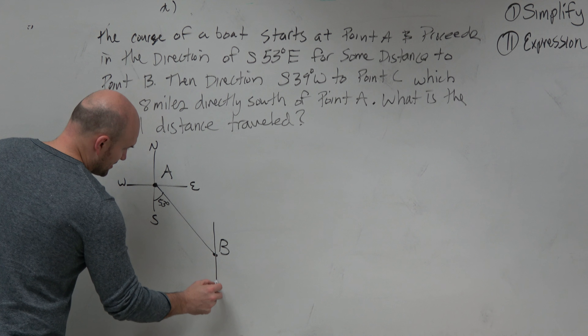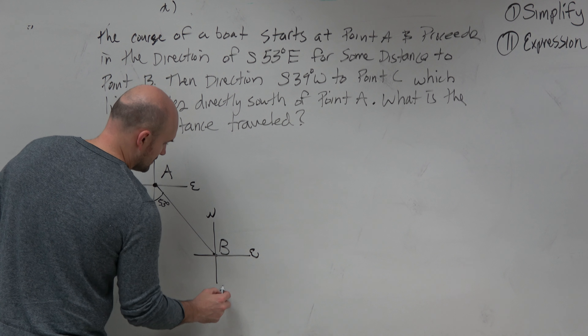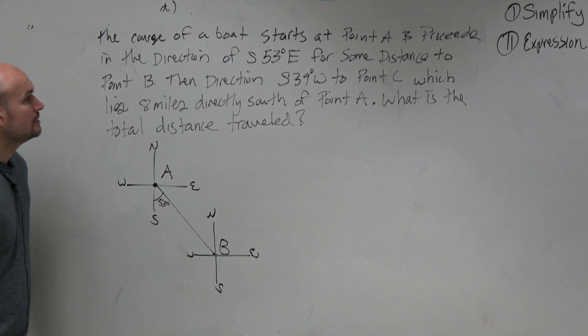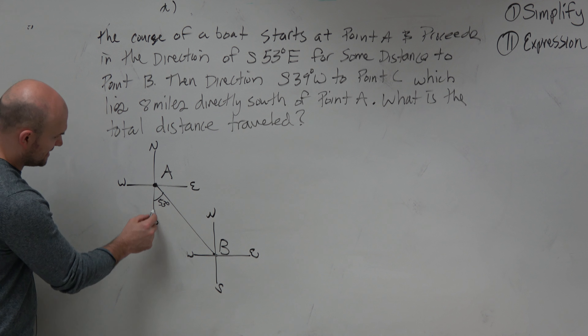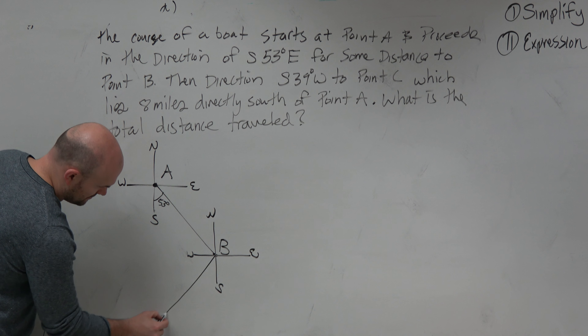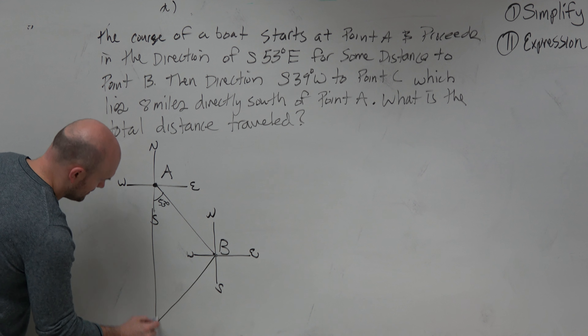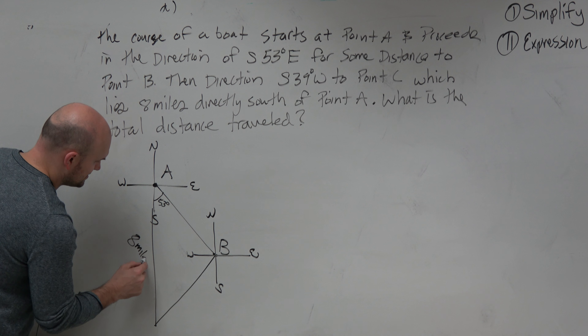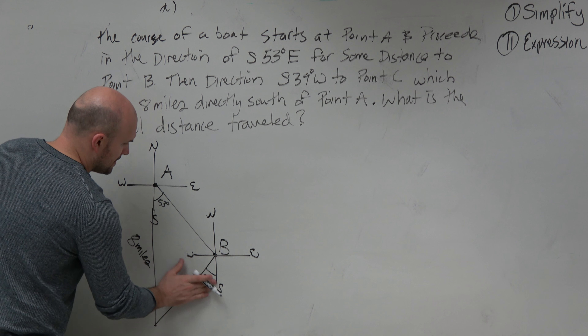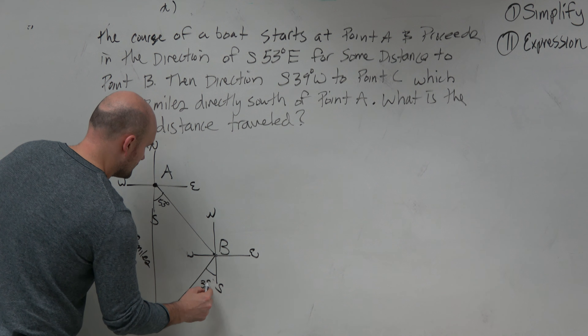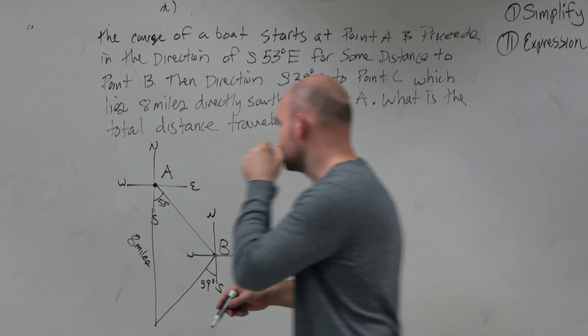I'm going to redo point A. I'm going to say, here's my north, east, south, west — and now here's A, because I'm talking about bearings. Then it says it's going to go south 53 degrees east. The first tells you the direction to start, and then you're going to go 53 degrees east for some distance to point B. So I'm going to go south 53 degrees — so there — and we'll call that B.